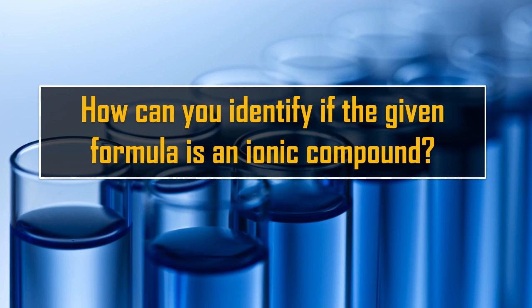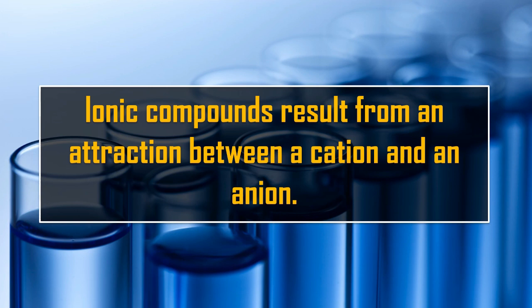In chemistry, chemicals are expressed using chemical formulas, and these chemicals are commonly called compounds. We have different types of compounds. We have covalent compounds and we also have ionic compounds. But how can you identify if the given formula is an ionic compound? Before you know how to name or write the formula for a specific compound, you should first know what type of compound you are dealing with.